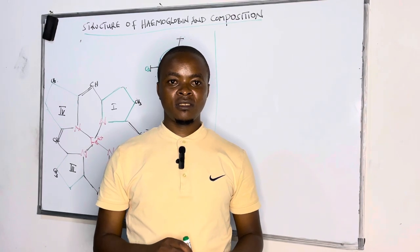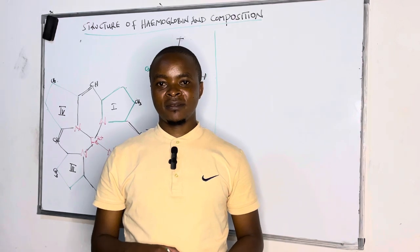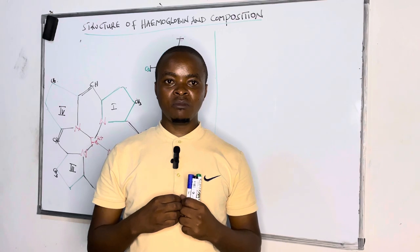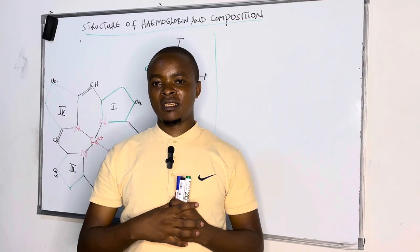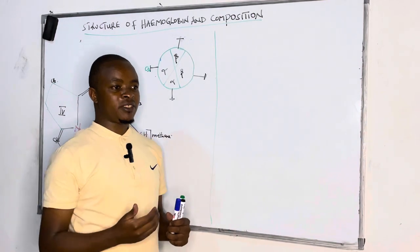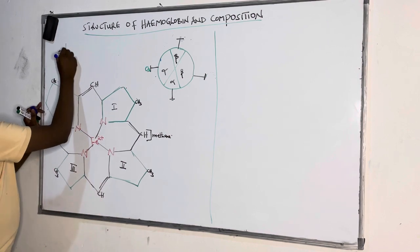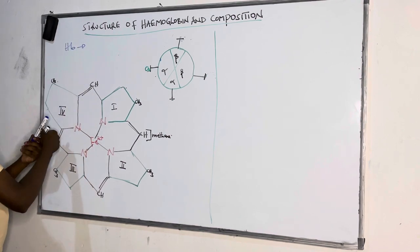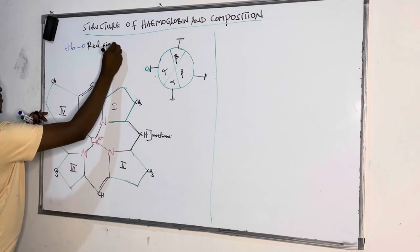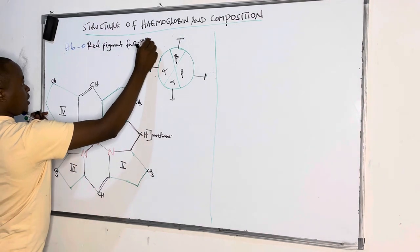Welcome to this session where we want to talk about the structure of hemoglobin and its composition. In hematology we cover hemoglobin, and later we see how it is estimated in the laboratory. Hemoglobin is a red pigment found in red blood cells.